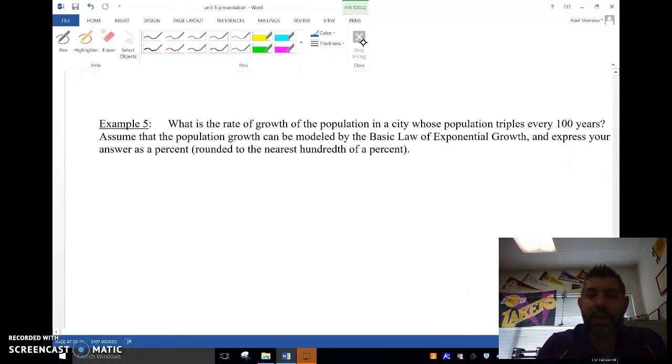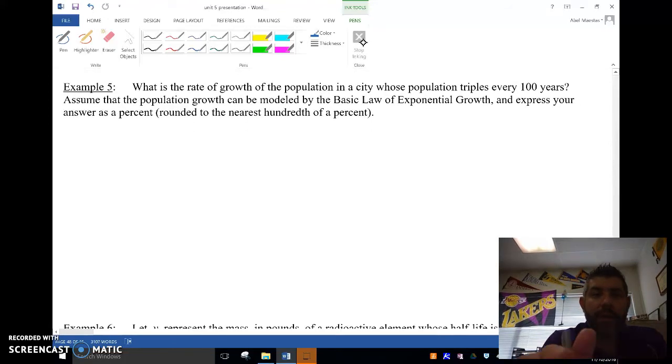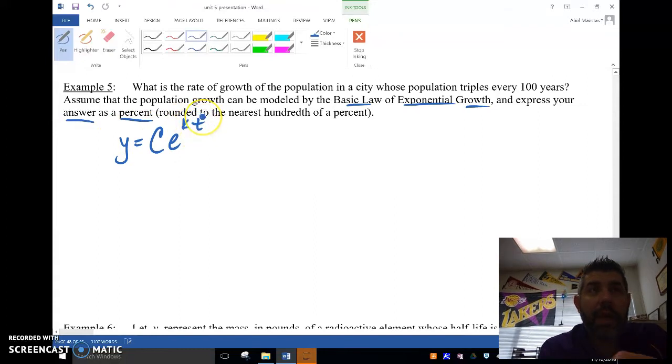Let's take a look at a couple examples here. What is the rate of growth of the population in a city whose population triples every 100 years? Assume the population growth can be modeled by the basic law of exponential growth and express your answer as a percent. We're going to use y equals C e to the kt and put in the information that we already know. We know that it triples every 100 years, so whatever we start with, in 100 years we're going to have three times that amount.